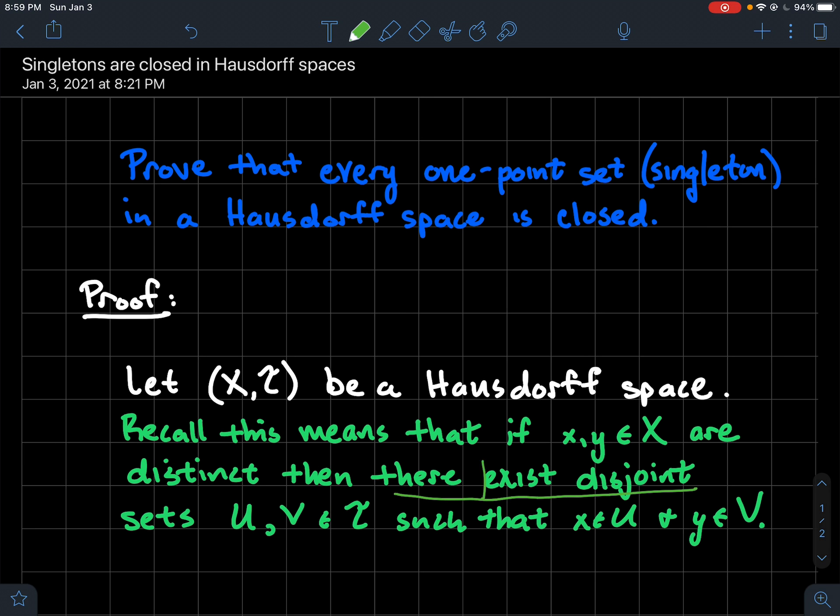There should exist disjoint, so no overlap, sets U and V from the topology. In other words there should exist two disjoint open sets. Recall that if you're in the topology we commonly refer to these as being open.